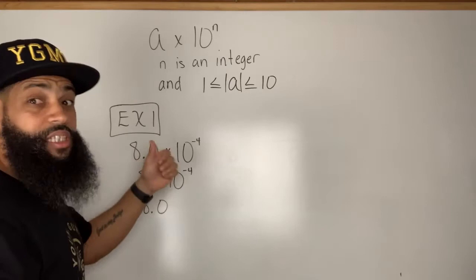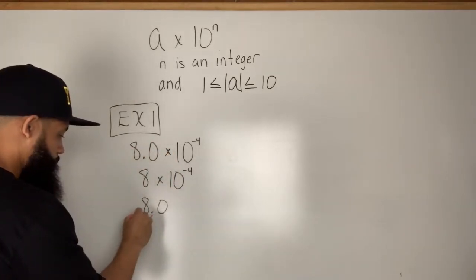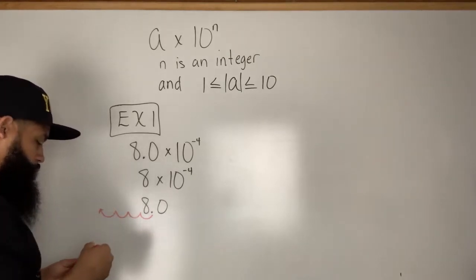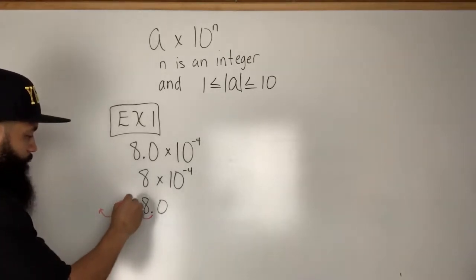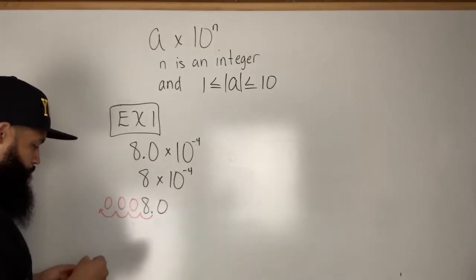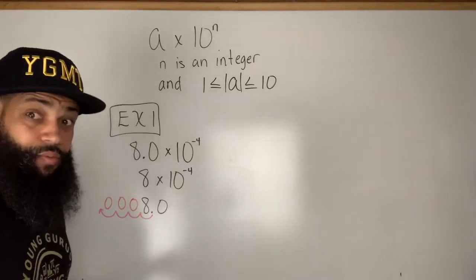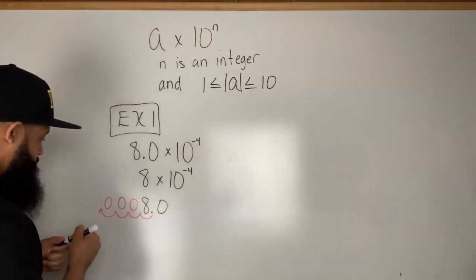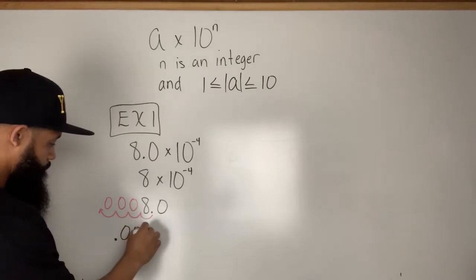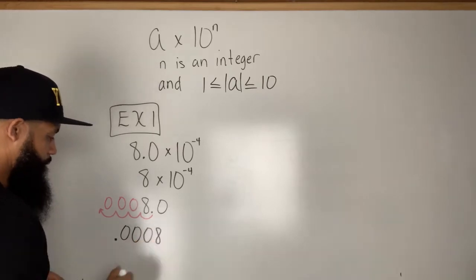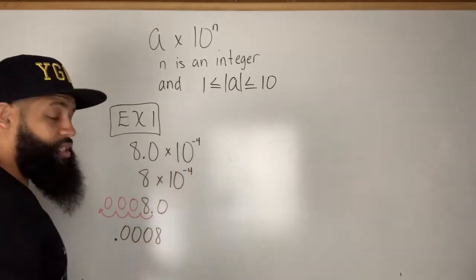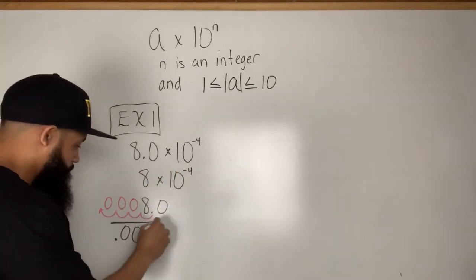I'm going to move the decimal to the left four places: one, two, three, four — my decimal ends up there, and I fill those little holes with zeros. So my standard form is 0.0008.